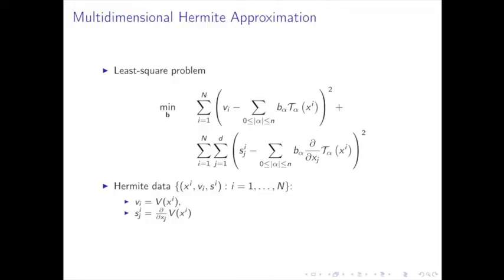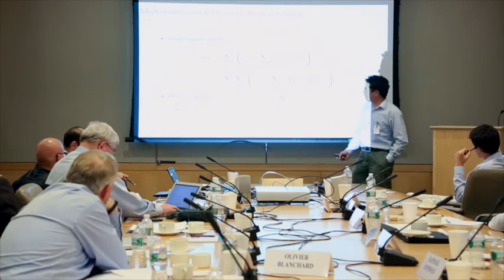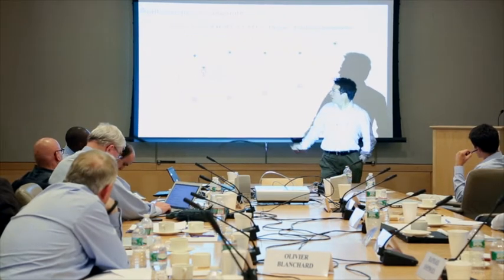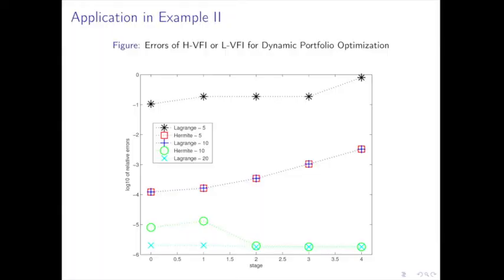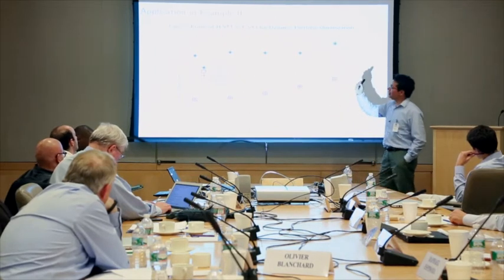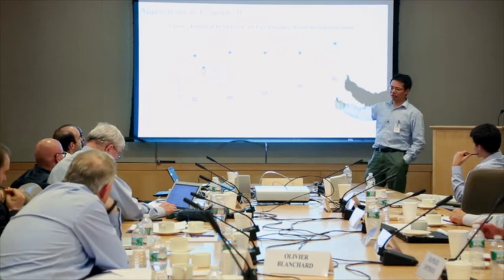After gathering both the level information and slope information, we use a least-squares fitting to get the approximation of V. This can be computed very efficiently. This is the Hermite approximation, which uses both function values and gradient values at each approximation node.